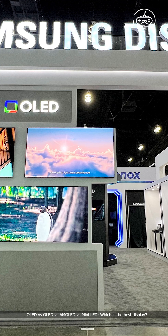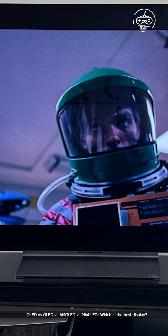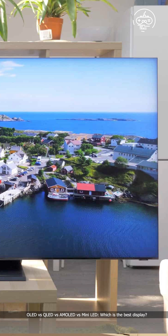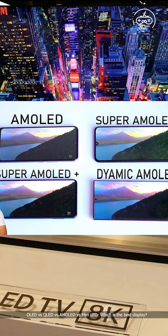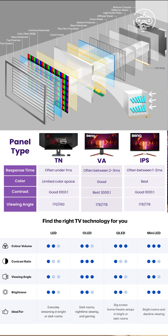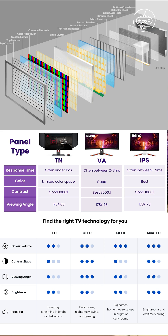The latest and greatest display types. You've likely come across various display types when looking at the latest laptops, the best computer monitors, TVs, or even phones. LCD, IPS, and LED displays are somewhat outdated, while the premium, sought-after panel type right now is OLED. However, you'll occasionally also hear about QLED, AMOLED, and Mini-LED too.